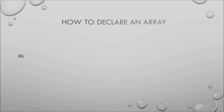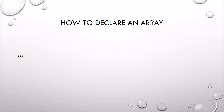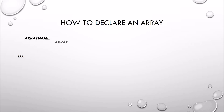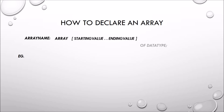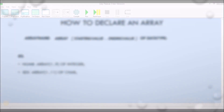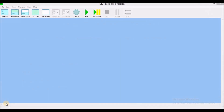Let's look at how to declare an array. The first thing you're going to have is your array name, followed by the word 'array', square brackets, your starting value, dot dot (which means 'to'), ending value, data type, semicolon.